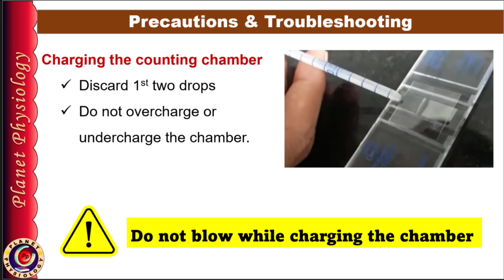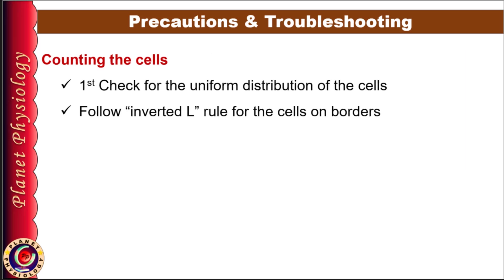Lastly let's cover some precautions while cell counting. First and most important: before you begin to count, always examine your chamber under low power to ensure that cells are evenly distributed. This helps maintain accuracy in your results and saves your time later. Follow inverted L rule for cells on the borders. This prevents recounting and ensures each cell is counted just once. Recall the final step of calculation: N × 10,000. So if you count one extra cell your count increases by 10,000. Be careful while counting.